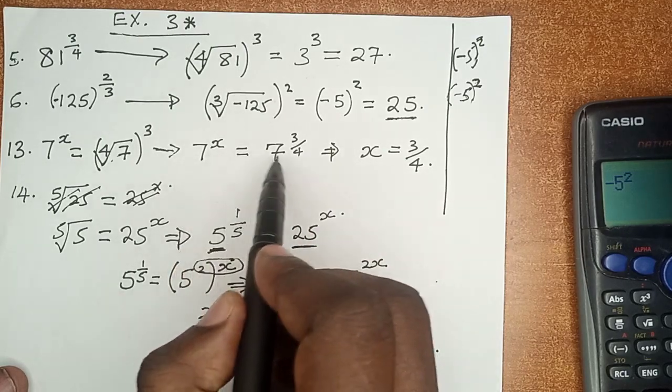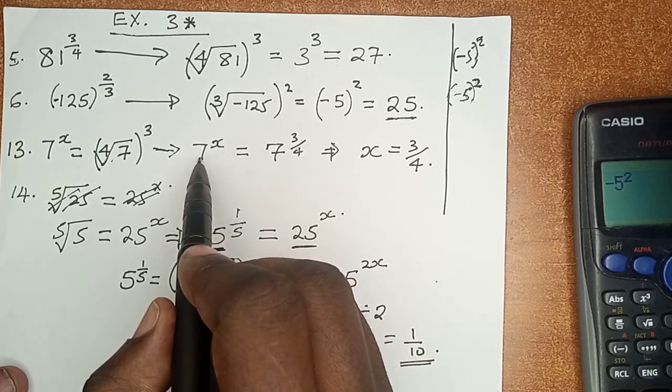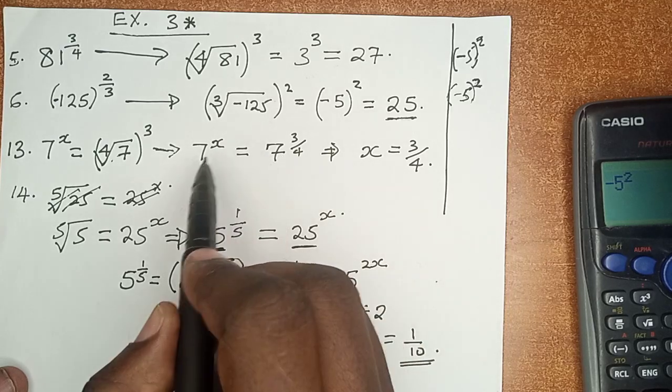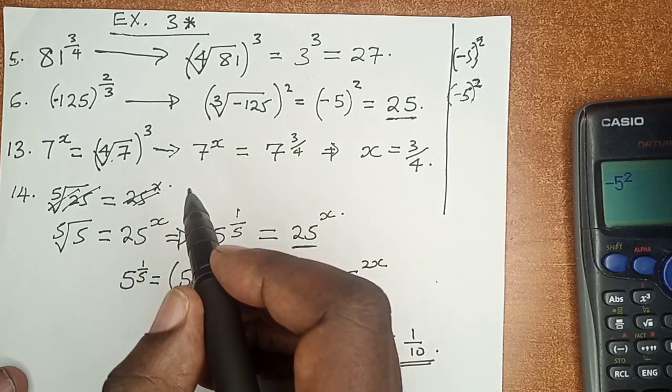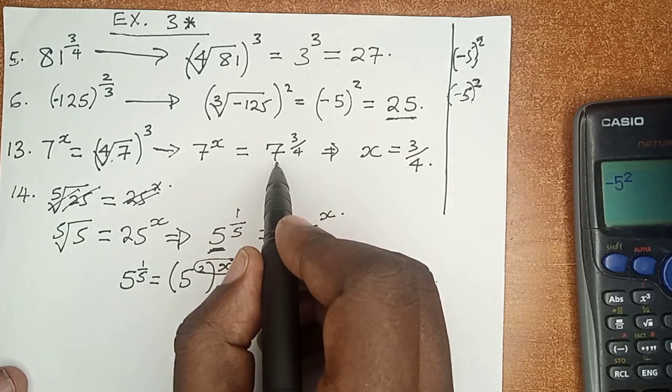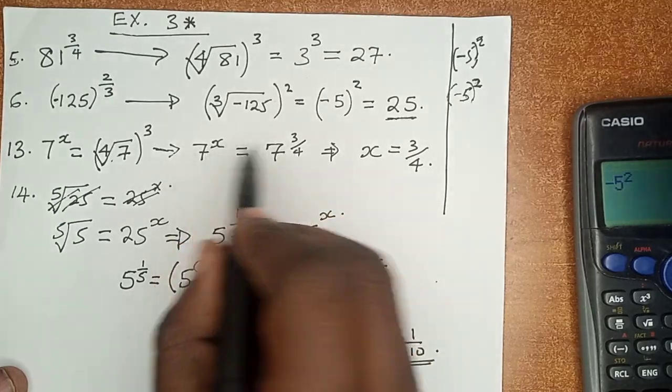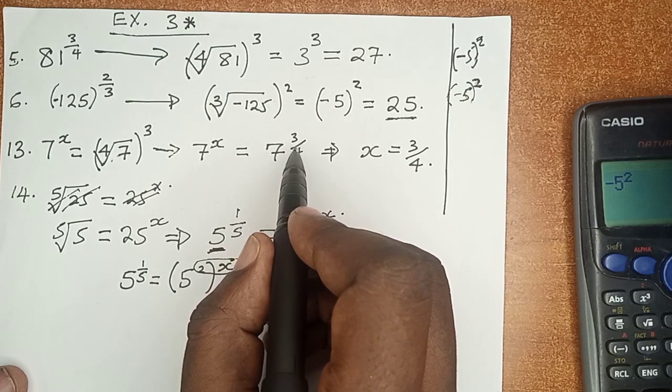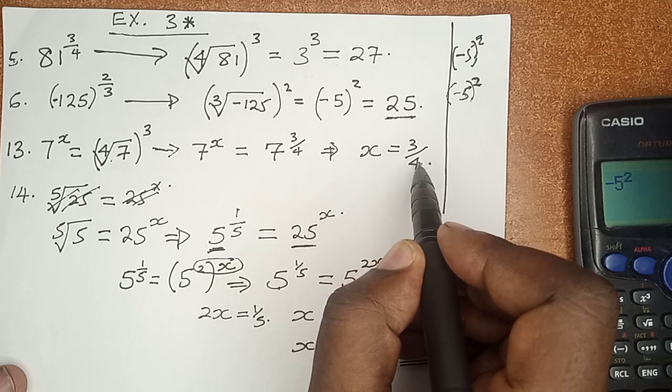And now that the left-hand side is equals to the right-hand side and the bases are equal. In other words, we have base 7 raised to power x and base 7 raised to power 3 over 4. It goes without saying that even the indices themselves are equal. So straight away, x is equals to 3 over 4.